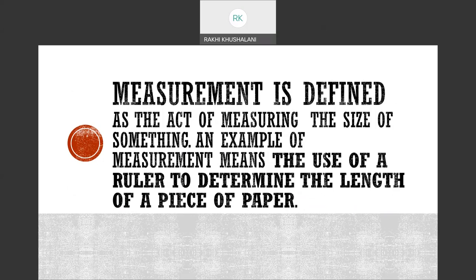Measurement is defined as the act of measuring the size of something. An example of measurement means the use of a ruler to determine the length of a piece of paper. When I pick up my scale, I pick it up to measure some length. It can be the length of a piece of paper, a compass, a ribbon, a pencil, your eraser, your sharpener, and so on. That is what measurement means — the use of a ruler.